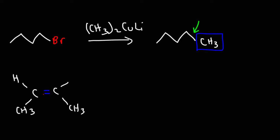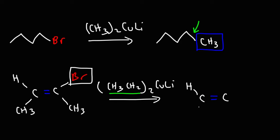So consider this example. If we were to use (CH3)2CuLi, what's going to happen is we're going to replace the bromine atom with the R group that we see here.